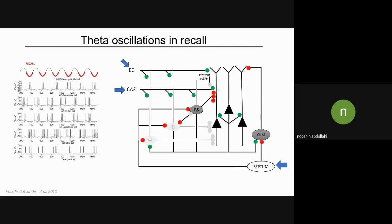During recall, AA and B interneurons are inhibited, releasing the soma of pyramidal cells. So you can see that CA1 neurons generate spikes during the recall cycle.